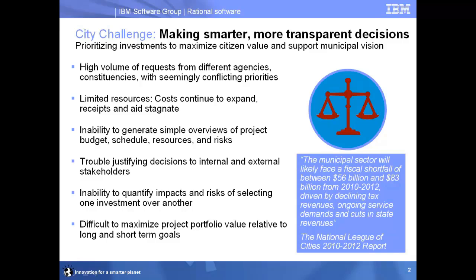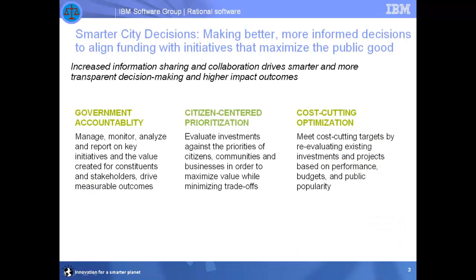without a clear and visual illustration of the selection process, the decision criteria, and the trade-offs, decision-makers can be second-guessed, particularly when they need to balance long-term strategic goals with the short-term needs of constituents. Each of these challenges can be addressed using Focal Point. I'll focus on three specific capabilities: the first, government accountability.